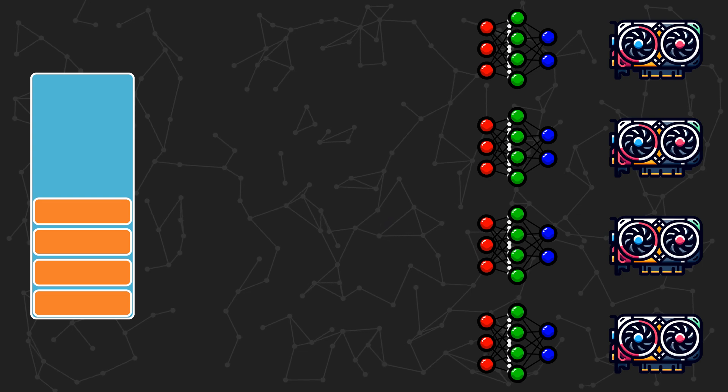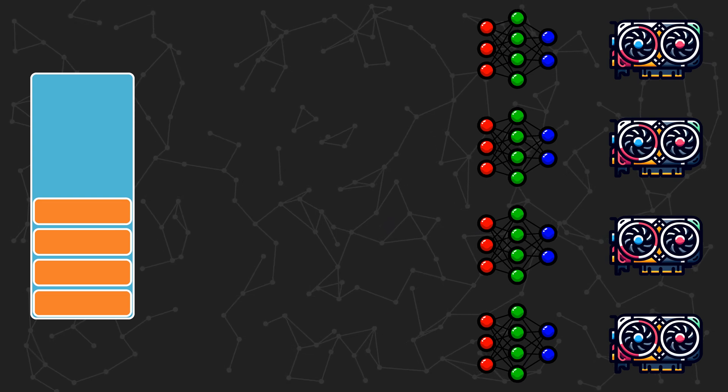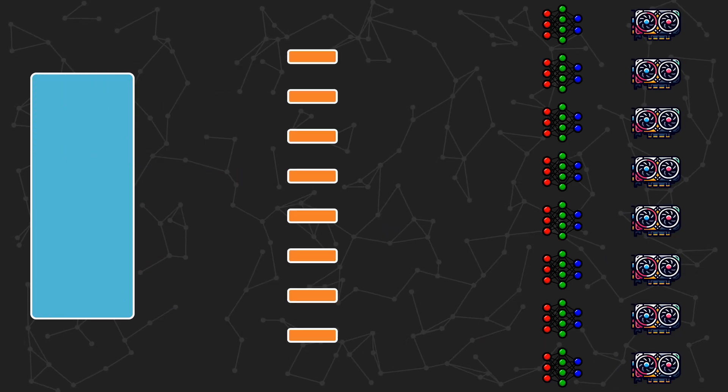The cool thing about data parallelism is that it scales seamlessly to 4 GPUs, 8 GPUs, or any number of GPUs. Just ensure each GPU gets its own batch of data to train on. While I don't have 8 GPUs, let's see the benefits of having a second one.